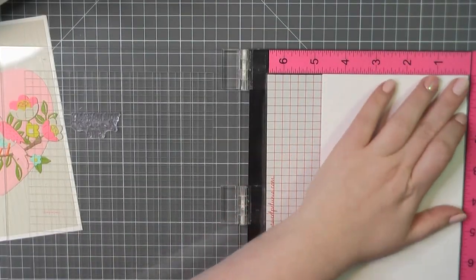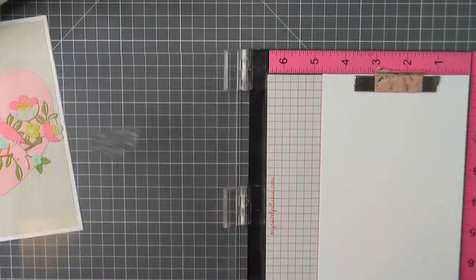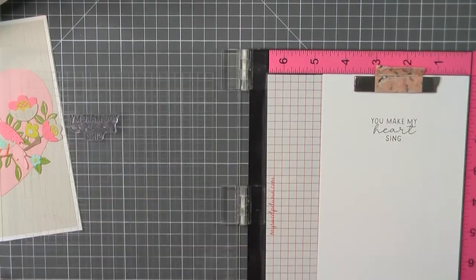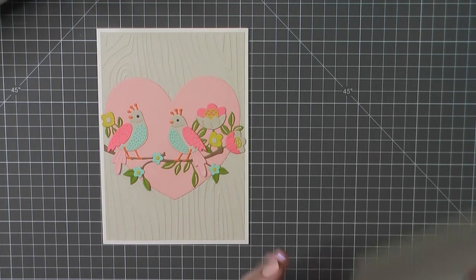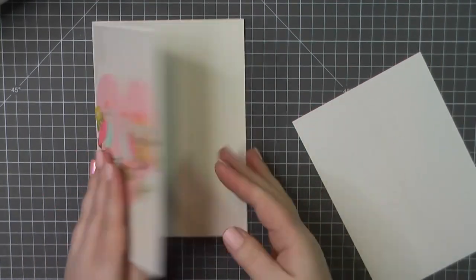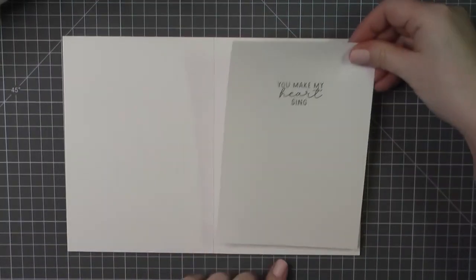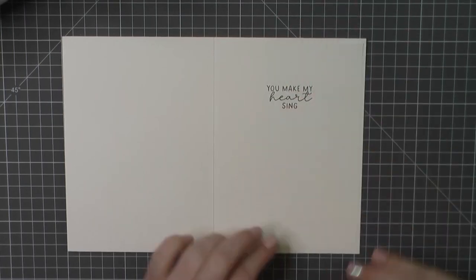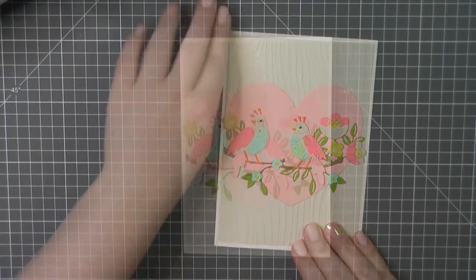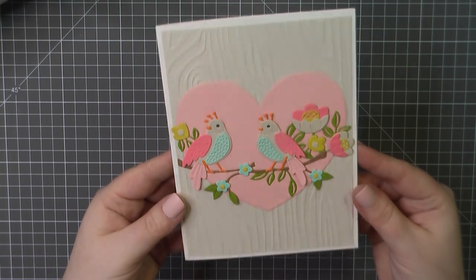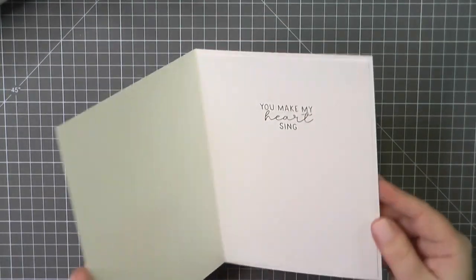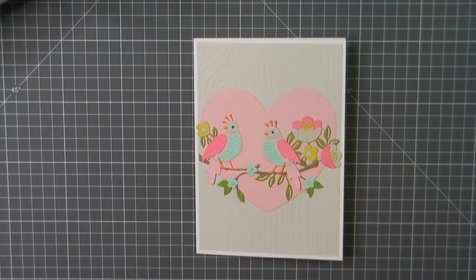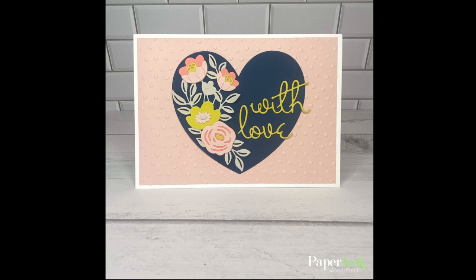For the inside I'm again on a Neenah paper panel trimmed to four and three-quarters by six and three-quarters and I'm stamping out the sentiment you make my heart sing. For this I used my Simon Says Stamp intense black ink. I will add some ATG to the back of that and place that on the inside as well. Now after I finished filming this I decided that the front needed something a little something more so I ended up taking a quarter inch strip of that same blue cardstock and I stamped the sentiment always on that and added it along the bottom but I did not do that on camera so you'll see in the end stills where I've added that but that will complete the cards for today.